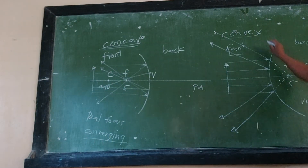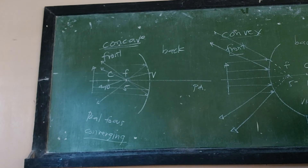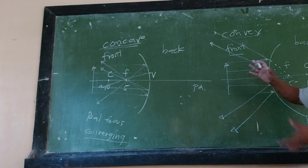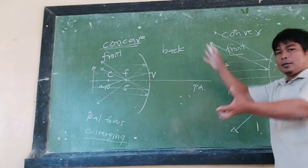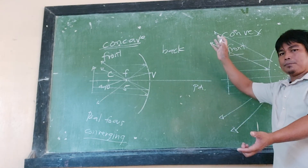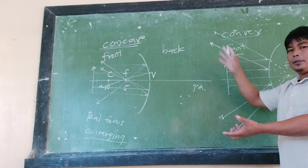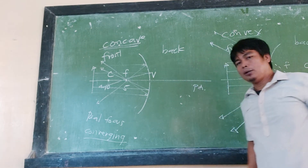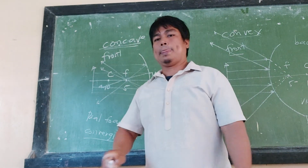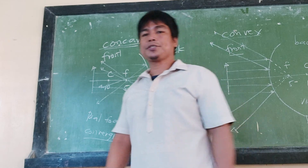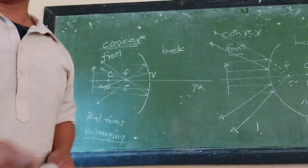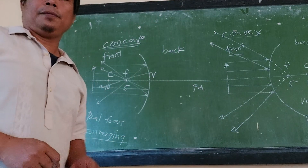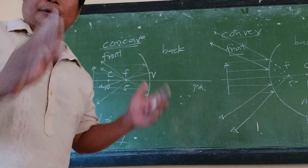Comparing the two, the convex mirror is actually a diverging mirror — diverging because the rays of light are spreading apart, or diverging. So that is the comparison between the two types of spherical mirrors.